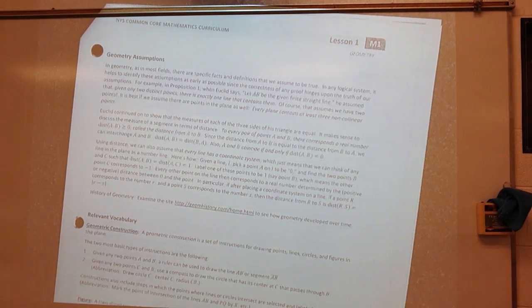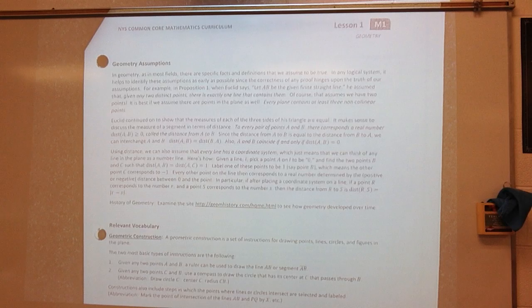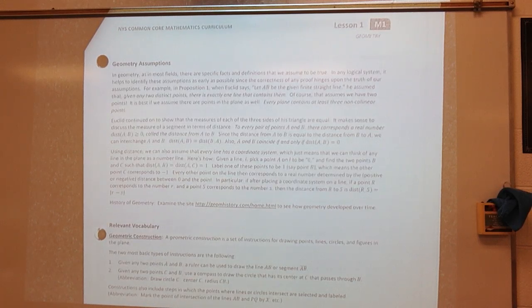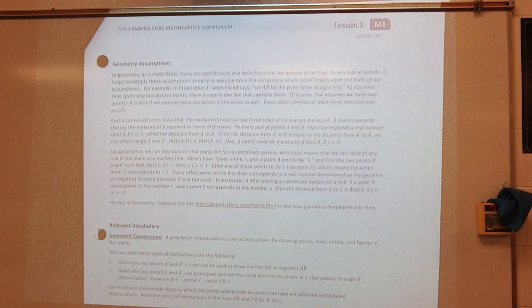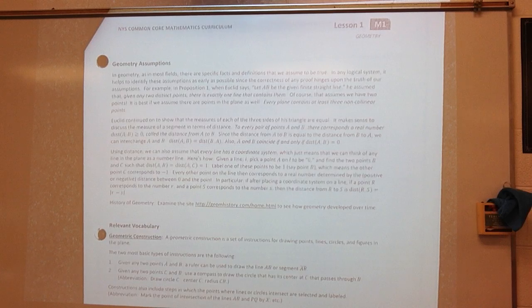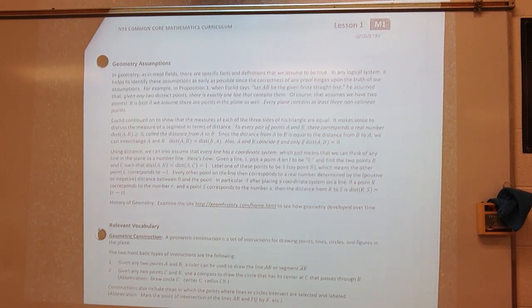All right. Geometry assumptions. I told you this lesson was really short. It's a lot of reading. So, I want you to kind of just look at this. In geometry, as in most fields, there are specific facts and definitions that we assume to be true. In any logical system, it helps to identify these assumptions as early as possible, since the corrections of any proof hinges upon the truth of our assumptions. For example, in Proposition 1, when Euclid says, let AB be the given finite straight line, he assumed that given any two distinct points, there is exactly one line that contains them. Of course, that assumes we have two points. It is best if we assume there are points in a plane as well. Every plane contains at least three non-colinear points.